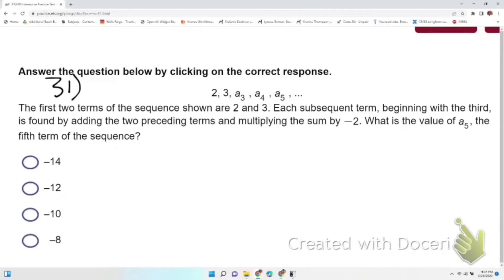All right, number 31. The first two terms of the sequence are 2 and 3. Each subsequent term, beginning with the third, is found by adding the two preceding terms and multiplying the sum by negative 2. What is the value of the fifth term of the sequence? So we're looking for the fifth term here, but we've got to find a₃ and a₄ first in order to do that.